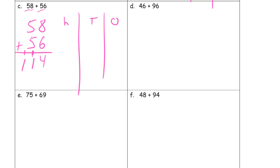And if we draw the chips, 58 is 5 tens and 8 ones. And then 56 is 5 tens and 6 ones. Bundle these 10 ones, bundle these 10 tens. That makes 100. We have 100, we have a 10, and we have 4 ones. That's 114.